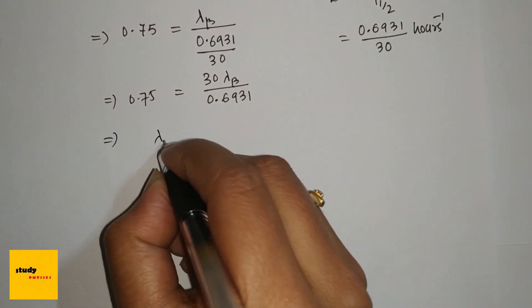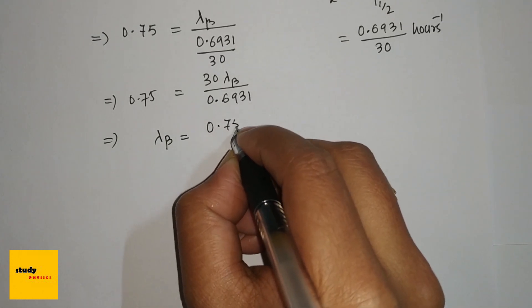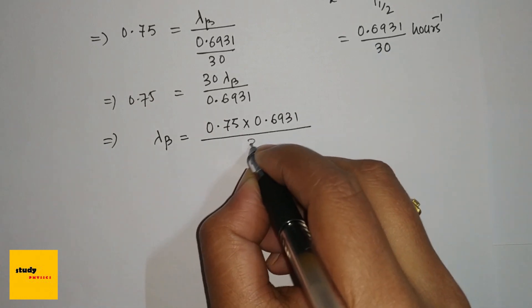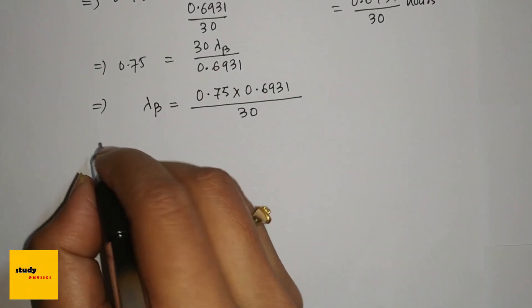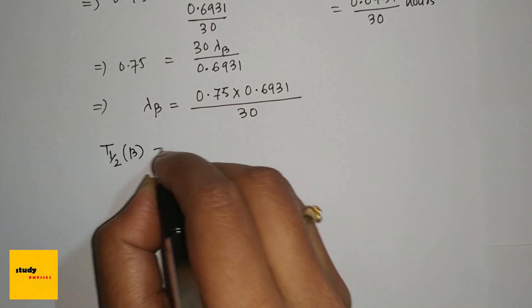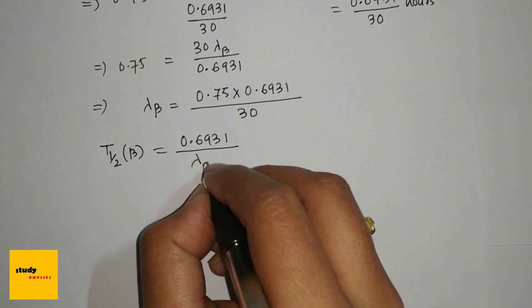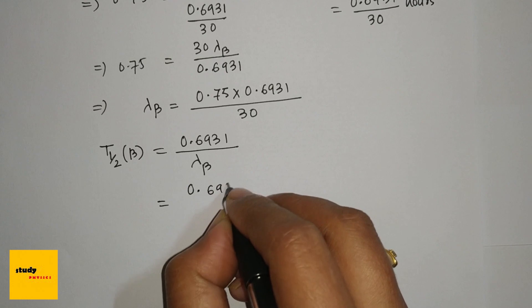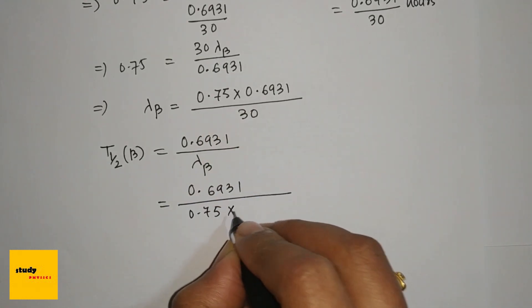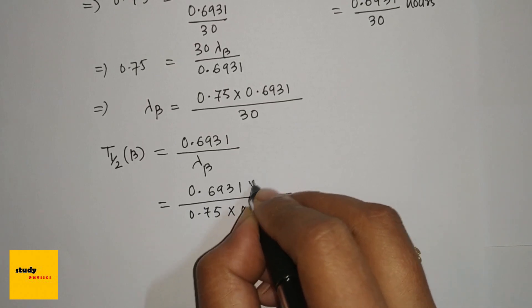From here, lambda beta is 0.75 times 0.6931 divided by 30. So the half-life of beta is 0.6931 divided by lambda beta, which equals 0.6931 divided by (0.75 times 0.6931 divided by 30).